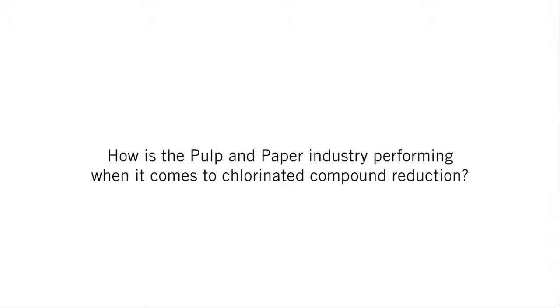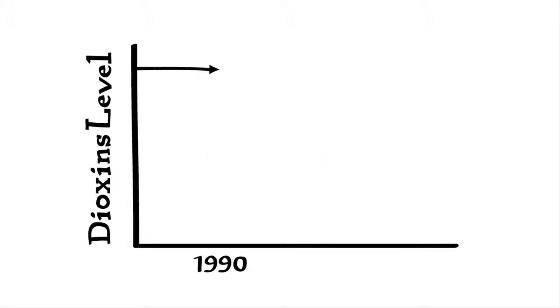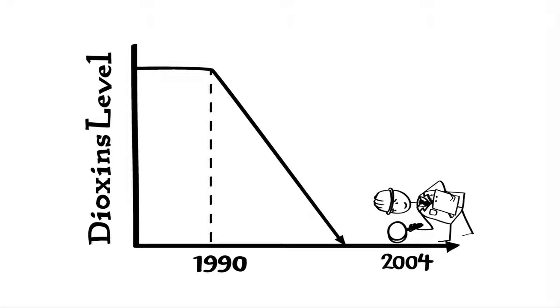How is the pulp and paper industry performing when it comes to chlorinated compound reduction? Since 1990, changes in bleaching technology have reduced dioxin discharges to a point where they cannot be detected in routine effluent monitoring tests. By the end of 2004, there had been a 90% decrease in the number of dioxin advisories downstream of pulp and paper mills in the US.